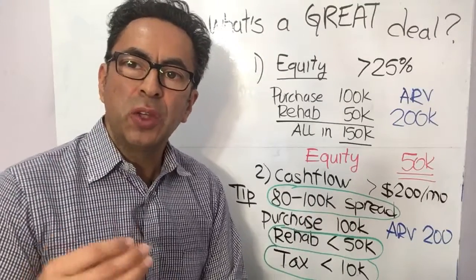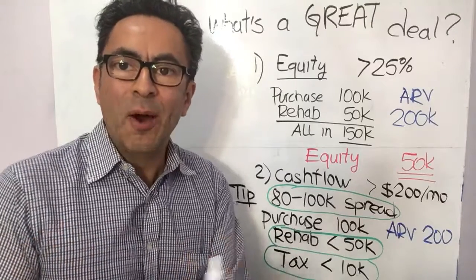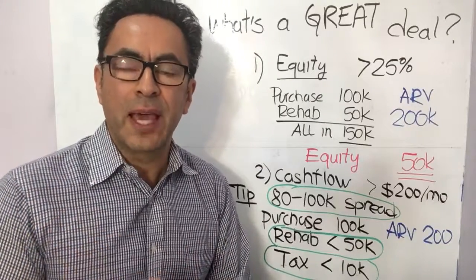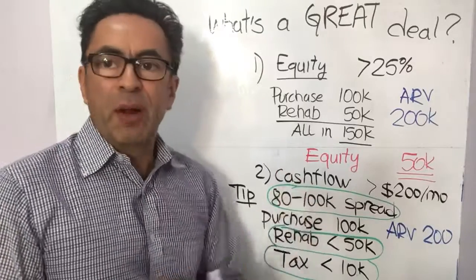The second factor that you need is cash flow. If you're going to buy and hold the property, you need to cash flow at least two hundred dollars per month. Now let me give you the rule of thumb to identify a great deal in seconds. You need three things. You need a spread of